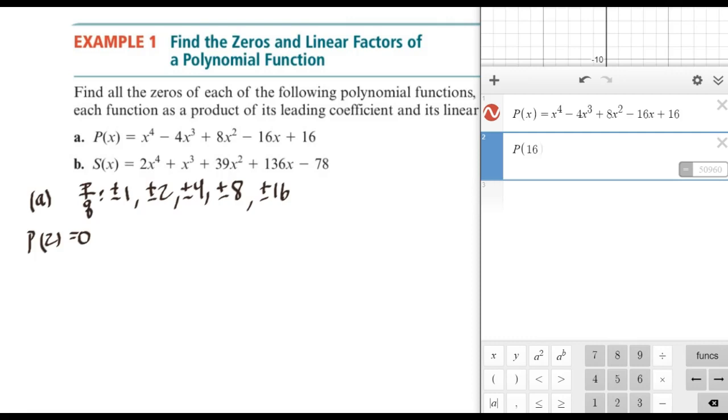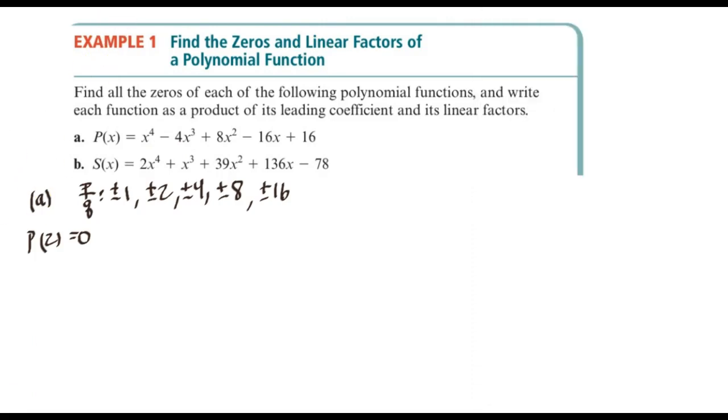And I bet if we did Descartes' rule of signs, we would actually determine that there would have to be... Actually, let's do that really quickly. Let's do Descartes' rule of signs because you really should be doing this, and they didn't really talk about this. So notice that P... So if you looked at P(x), just I'm going to look at the function right here. Notice that there's one sign change. There's two sign changes. There's three sign changes. And then there's four sign changes.